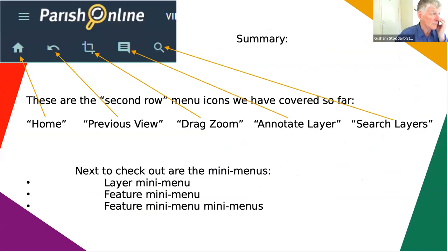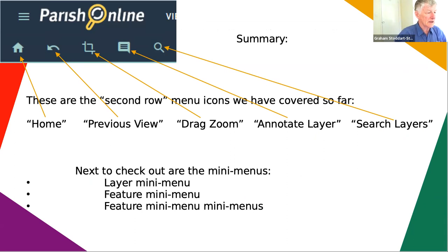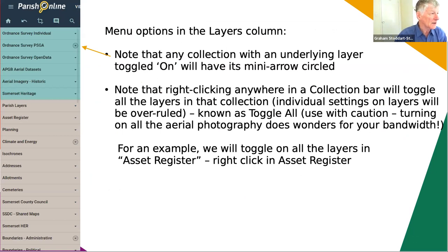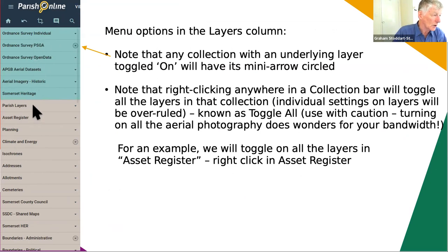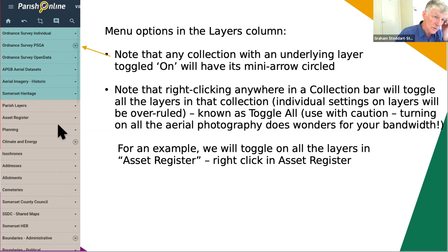So that was the first bunch of icons in what I call the second row of menus. We've gone through each of those and we're now going to do the mini menus that pop up when you click in various layers. Just a reminder of what happens when you've got layers turned on - this column shows all the collections of layers, and each line has a whole collection of layers underneath. The ones with layers turned on have a circle around them so you know where to go to turn something off.